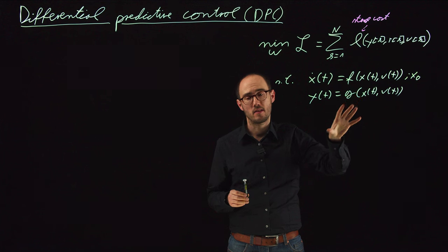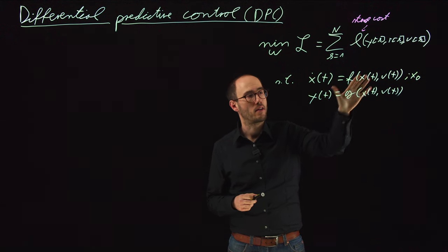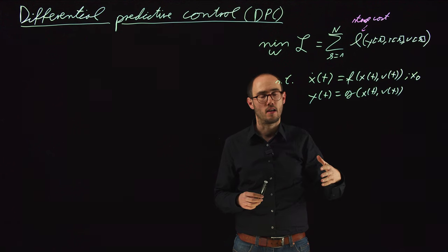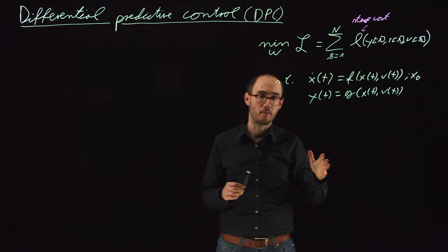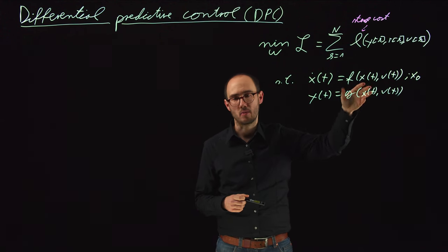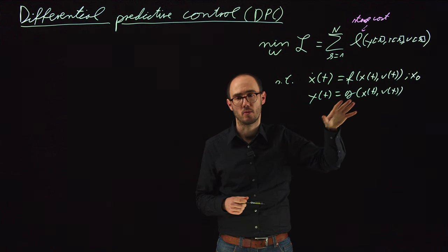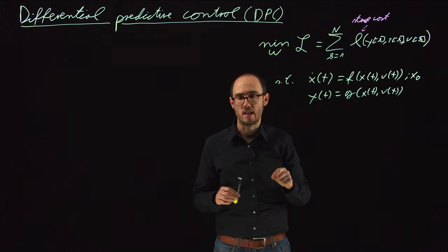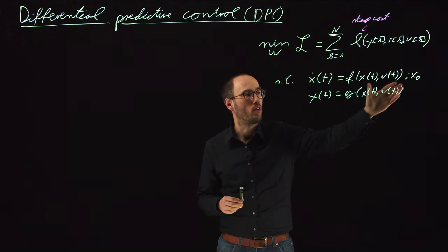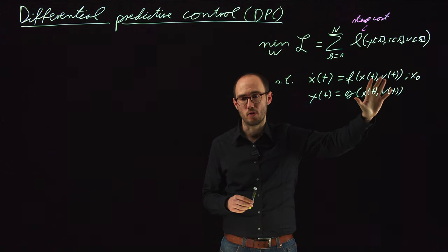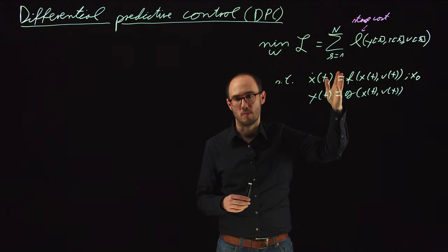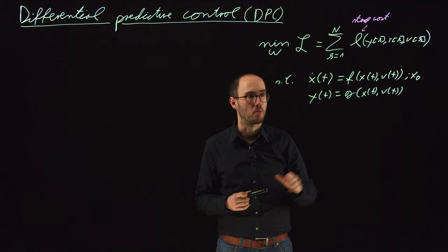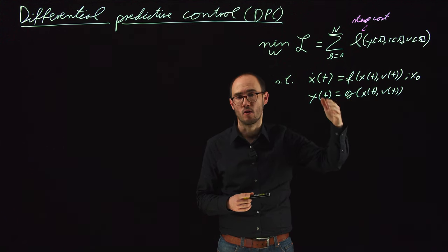The interesting thing with DPC is that we assume we have knowledge about the model and system dynamics, because we need a differentiable model description to get things going. In these examples, we assume that knowledge is given for simplicity, focusing on DPC itself. However, we can use any of the previous methods for nonlinear or linear model identification to get a proxy of the dynamic model, and then utilize that identified model to do DPC.